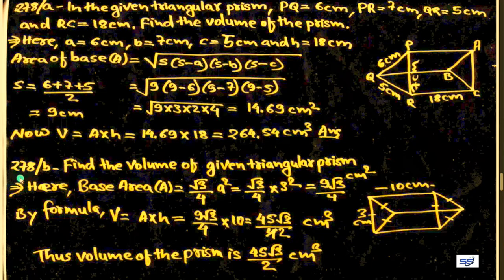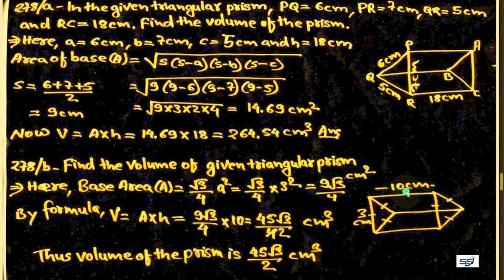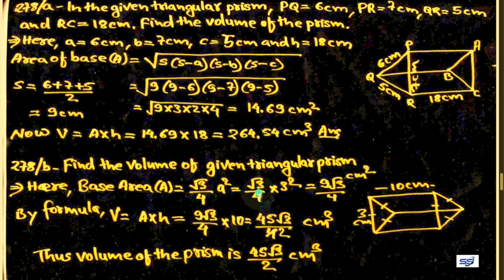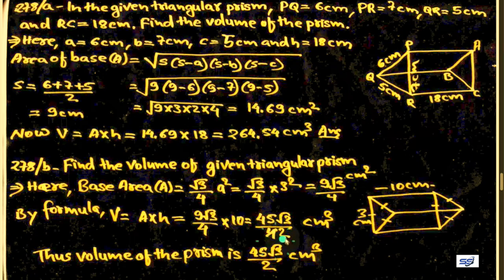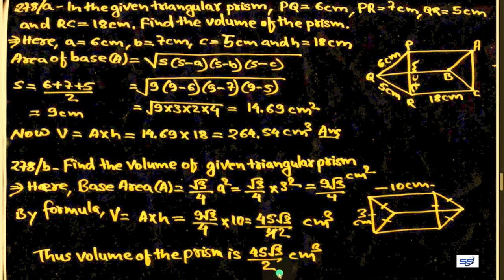Question 278b: find the volume of the given triangular prism with equilateral base where all sides equal 3 cm and height = 10 cm. Base area = root 3 upon 4 times a squared = root 3 upon 4 times 9 = 9 root 3 upon 4 cm squared. Volume = area into height = 9 root 3 upon 4 into 10 = 45 root 3 upon 2 cm cubed.